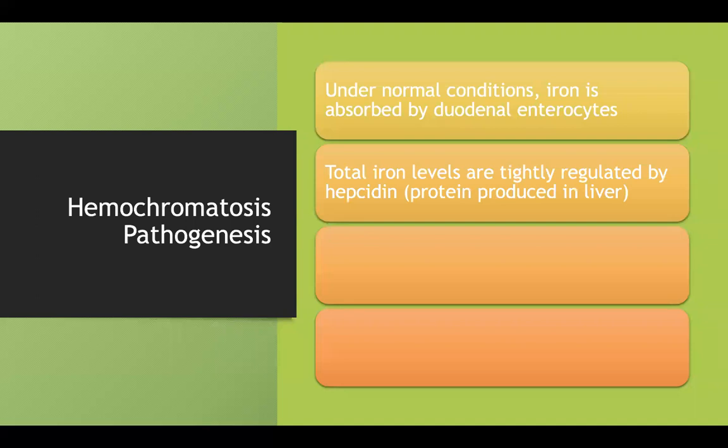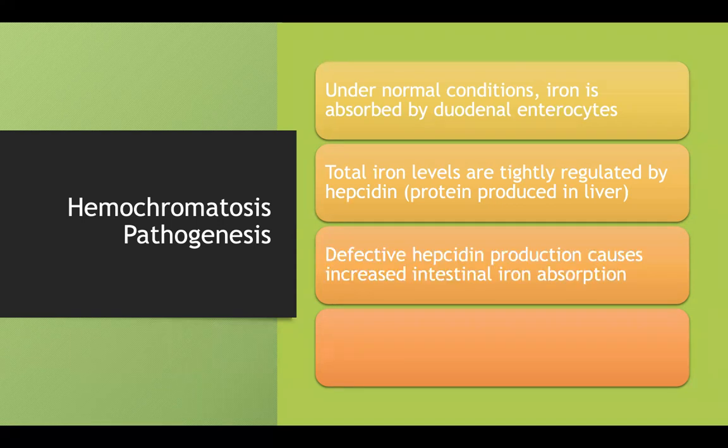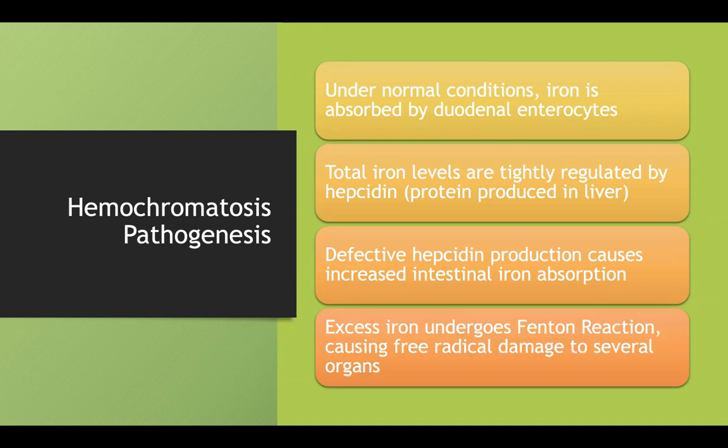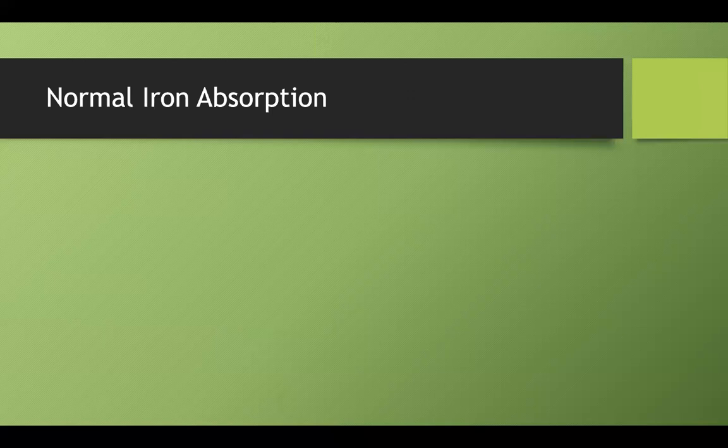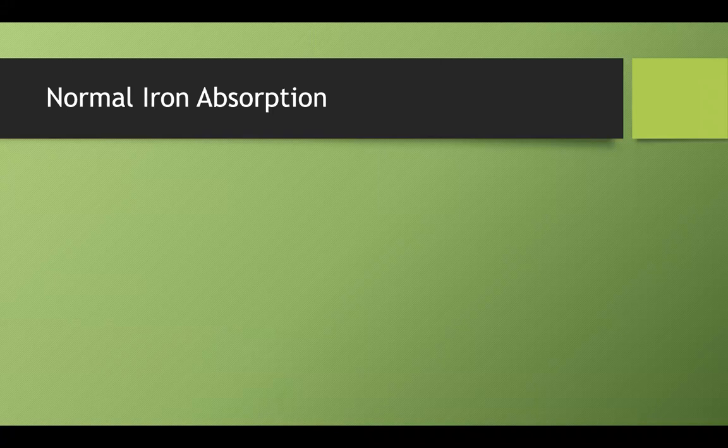Total iron levels are tightly regulated by a protein called hepcidin. If you have defective hepcidin production, you'll get increased intestinal iron absorption into the bloodstream. The problem with excess iron is that it can undergo the Fenton reaction, which causes free radical damage to many organs. I'll start by talking about the mechanism we discussed regarding normal iron absorption.